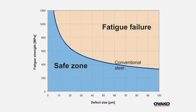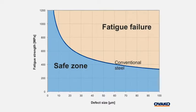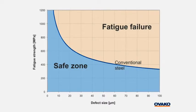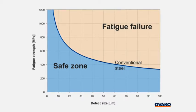In the first webcast, the fatigue strength versus defect size graph was presented and discussed. This graph shows that the fatigue strength of conventional steel is significantly affected by the presence of large defects.